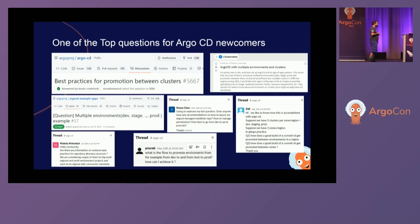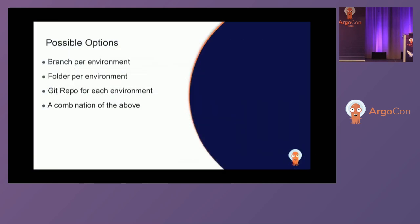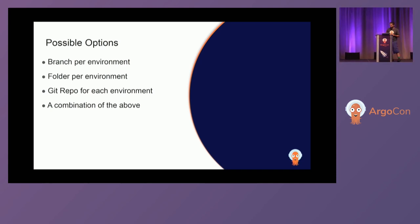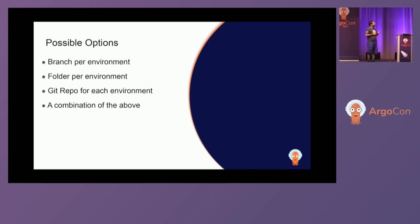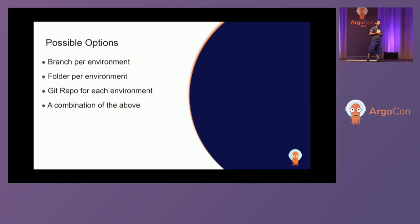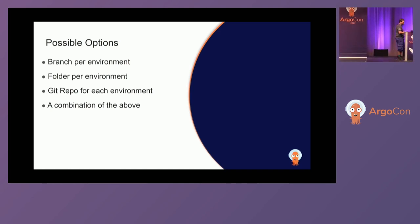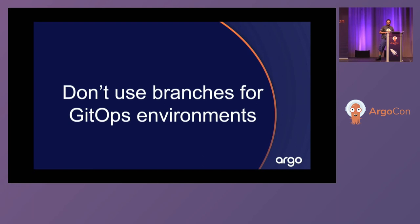I got tired of answering the same questions repeatedly, so I wrote some articles to solve this once and for all. This presentation is a summary of those articles — it's only ten minutes, so if you need more details you'll need to read them. When talking with people, they have many choices: branches, folders, or repositories, plus combinations. A lot of companies say 'I'll use branches and repositories' or 'folders and repos' — the combinations are endless.